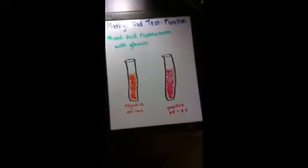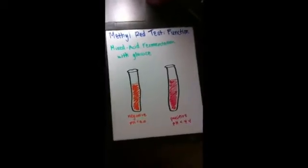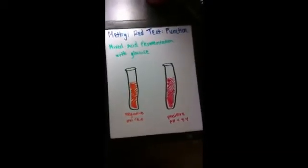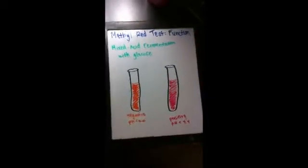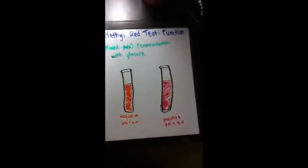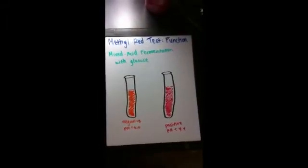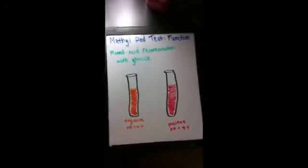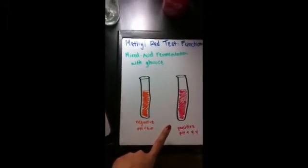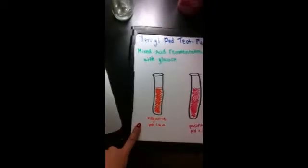In the broth of the test, it contains glucose, peptone, and phosphate buffer. So when you give the broth to organisms that perform mixed acid fermentation, they will produce enough acid to overcome the buffering capacity of the broth. This will show a decrease in pH, and you can see this through the broth — when the broth turns red, it means that the pH is below 4.0, and this shows a positive result.